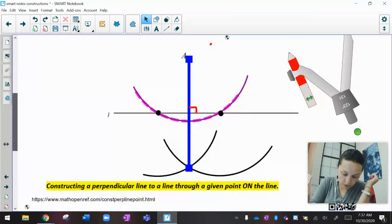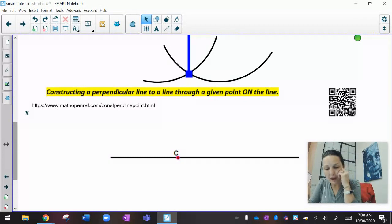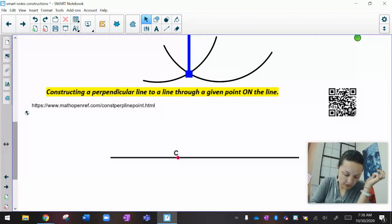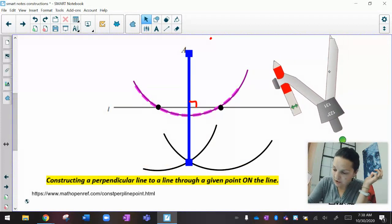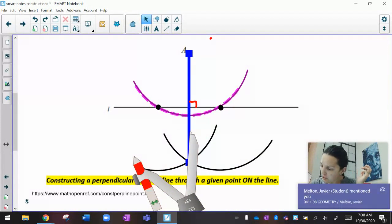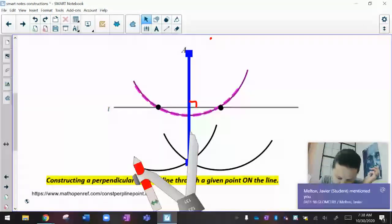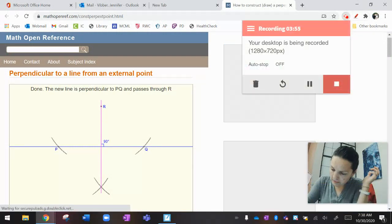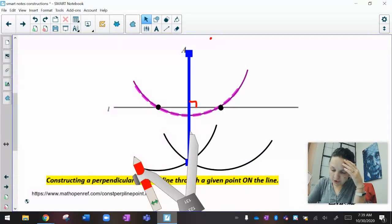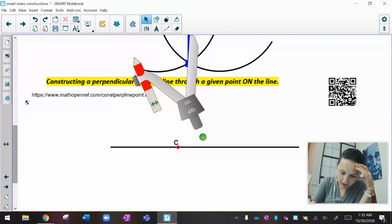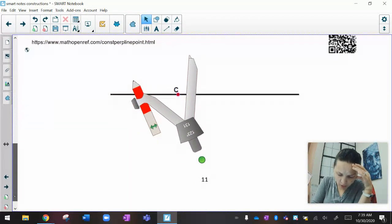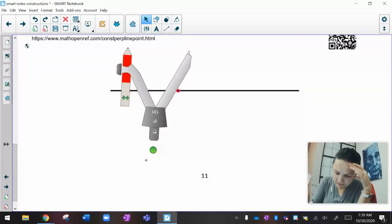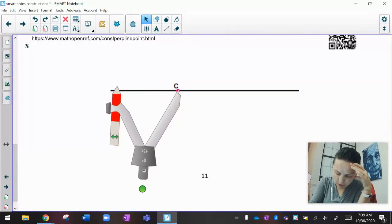Going back to our smart notebook, what if I want to make a perpendicular to a line, but it's through a point that's on the line instead of the point off the line? Honestly, it's very similar, almost the same exact construction. If I want to make a construction through a point on the line, we're going to start the same way we did before. I'm going to open this so that it hits this line twice.